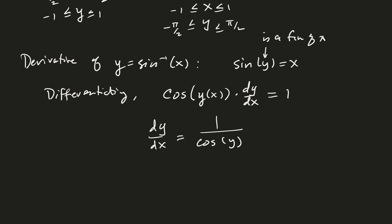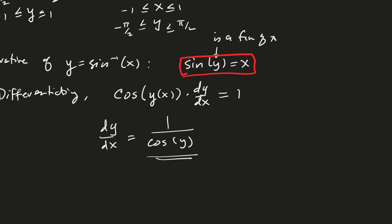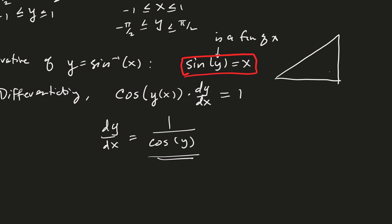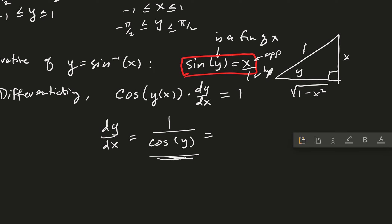I want the derivative in terms of x, not y. The equation sine(y) = x defines a right triangle: placing angle y, opposite side is x, hypotenuse is 1, so by the Pythagorean theorem the adjacent side is √(1 − x²). The cosine of y is adjacent over hypotenuse, which equals √(1 − x²) over 1, so 1 over cosine(y) equals 1 over √(1 − x²).